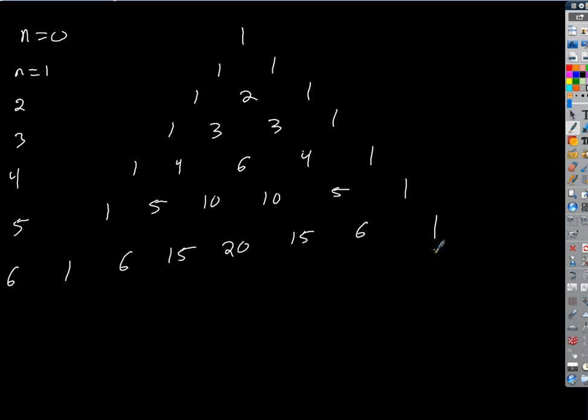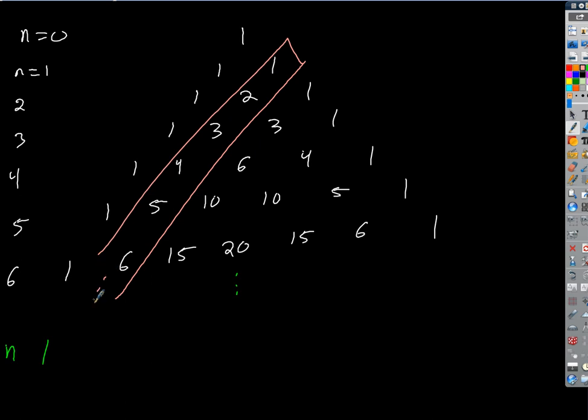Our goal then is — if we can write down the nth row — we want to know what those coefficients are going to be in terms of n. Use your brain, talk amongst yourselves and see if you can see a pattern. We know what the first one's going to be — one. But now what? Look at this diagonal going down: what do you notice? It's n. So the next one is going to be n. Then what?